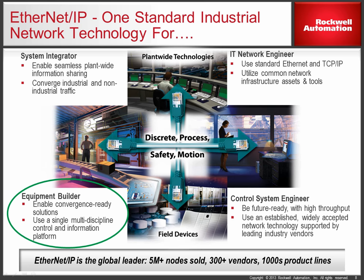EtherNet/IP advantage summary: EtherNet/IP is a single industrial network technology for multidiscipline network convergence, supporting applications such as discrete, process, drive control, safety, motion, power, time synchronization, and energy management. EtherNet/IP is well established — hundreds of vendors creating thousands of products for multiple applications, with over 5 million nodes installed around the world. Because it's established, EtherNet/IP helps reduce the overall risk of deployment with broad availability of products, applications, and vendor support. EtherNet/IP is supported by the ODVA, an organization of equals with principal members including Cisco Systems, Endress+Hauser, and Rockwell Automation.